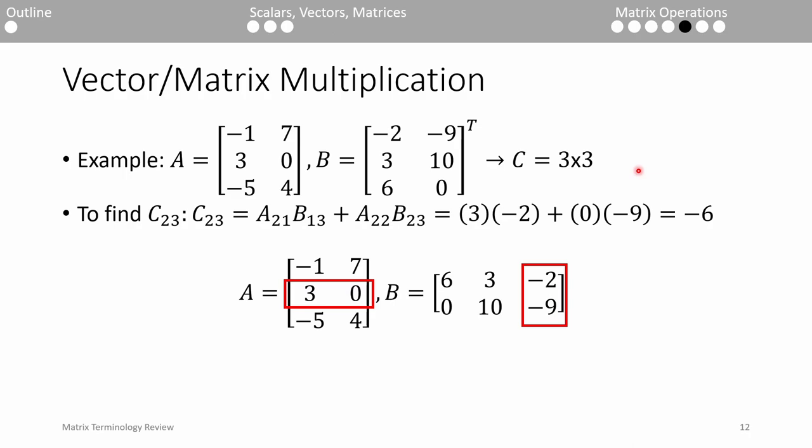Let's say we want to find the element of C in the second row and third column. We take the sum of the products of the elements in the second row of the A matrix and the third column of the B transpose matrix. We take the 3 and multiply it by the negative 2, then add it to the product of 0 and negative 9. We can repeat this process to find the other eight elements of C.